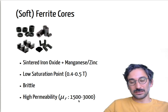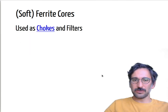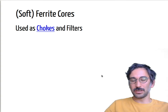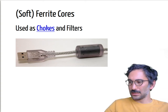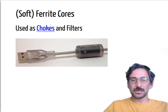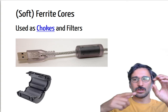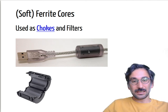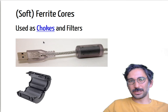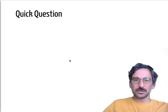Ferrite cores usually have high permeabilities — μr (relative permeability) is around a few thousand. These ferrite cores can be used as chokes and choke filters. You've probably seen those kinds of combinations — cores placed around a cable, creating inductance that filters out high-frequency noise because the inductance Z = jωL acts as a low-pass filter.